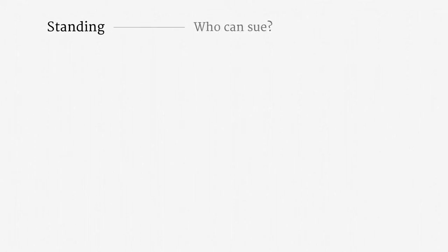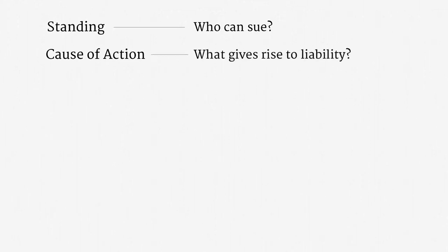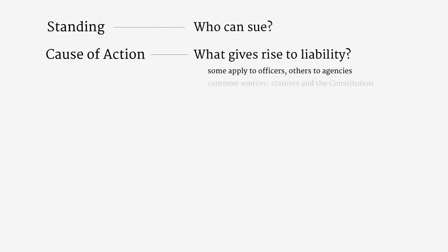There are four components of civil claims I would like to focus on. The first is standing — a constitutional doctrine that determines who can sue. The second component is a cause of action, which is a basis for legal liability. Some causes of action apply to individual government officers, and others apply to government agencies. In this course, the two common sources for a cause of action are the constitution and statutes. Details can be very tricky, and it's critical to identify and check off all the elements of a cause of action.